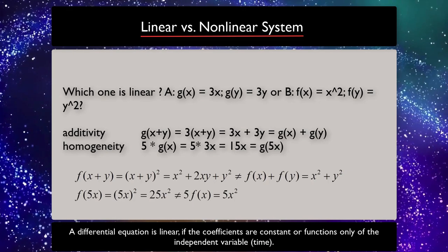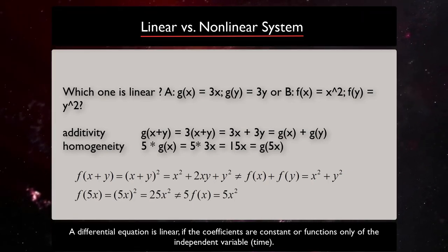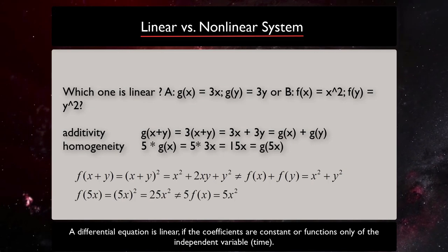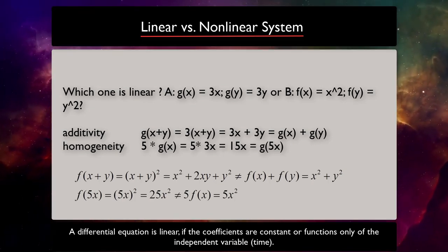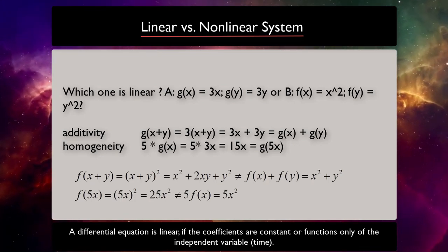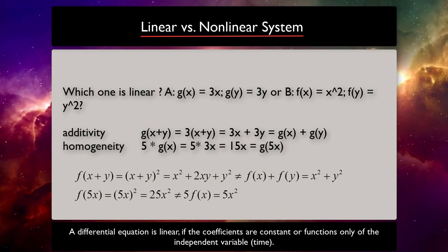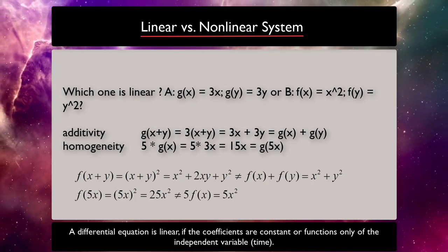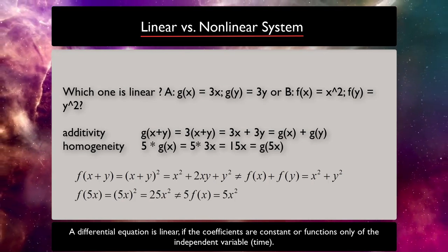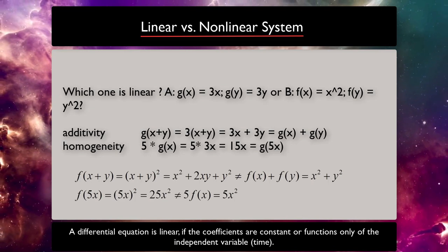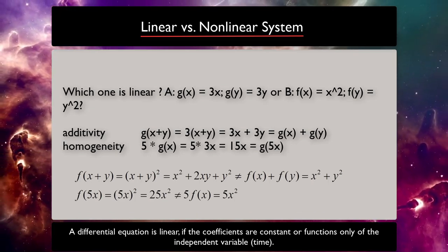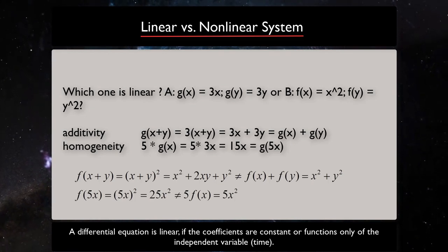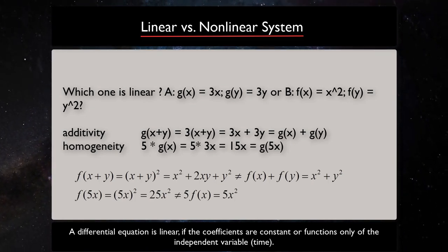So let's look at two systems and decide if they are linear or not. System A and system B, we start with system A. To see if system A is linear or not, we can use the two properties which we talked about, additivity and homogeneity. We need to test it for all equations in the system, but we have shown it only for x here. So if we test those properties, we see that system A satisfies them and so it's linear, while system B does not satisfy them and so it's not linear. When it comes to differential equations, a differential equation is linear if the coefficients are constants or functions only of the independent variable, normally time.